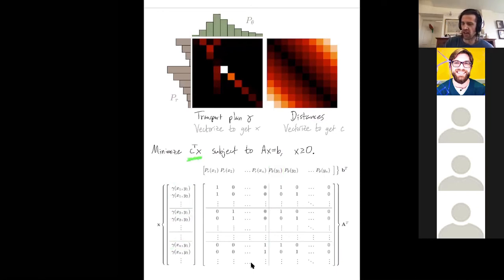All right. So in summary, this is the cost of our transport plan and these constraints encode that we actually have a transport plan, namely a joint probability density function whose marginals are given by R and theta. Questions about how this linear programming problem sets up optimal transport?